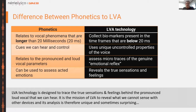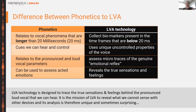The typical classical way of analyzing voice is done through phonetics, which relates to vocal phenomena we can hear — they are longer, have more amplitude, and deal with pronounced, loud vocal parameters. LVA technology is very different. While phonetics deals with 20 milliseconds and above, LVA deals with 20 milliseconds and below. We collect biomarkers present in these very short timeframes and very low amplitudes that we cannot hear ourselves. If we could hear them, we could regulate them — but that is the principle of LVA: to deal with things we cannot pick up with our ears, so we cannot regulate them.